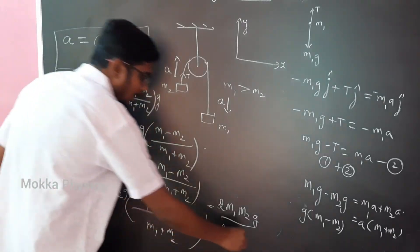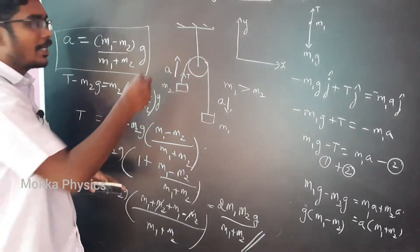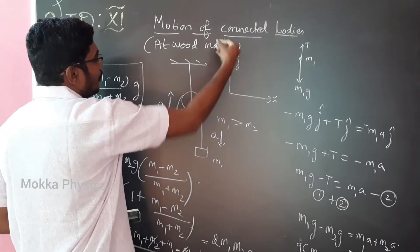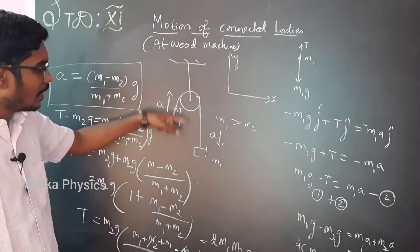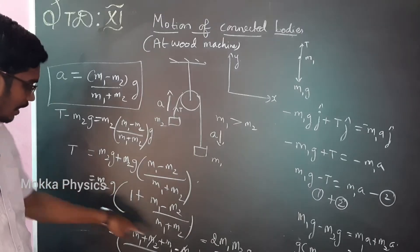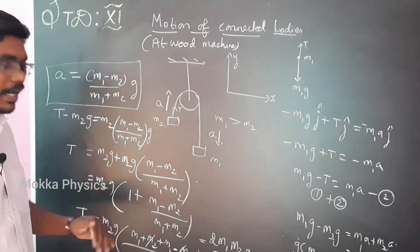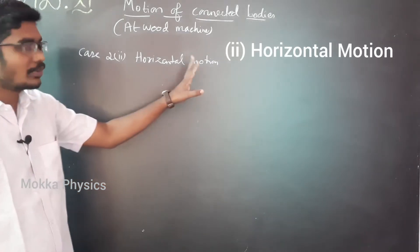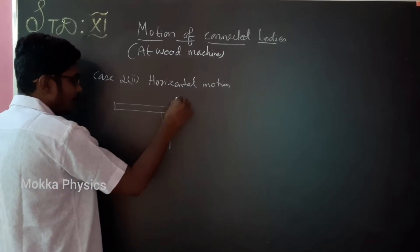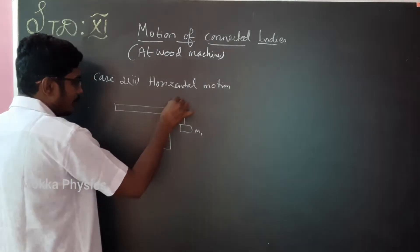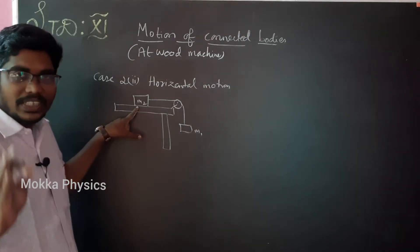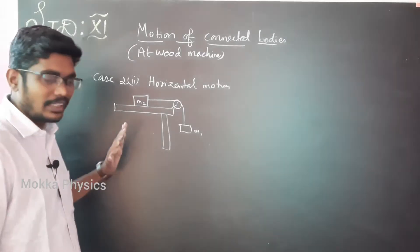This tension formula is for the Atwood machine — one pulley, two blocks. For the vertical case, we calculated both common acceleration and tension. Now we go to Case 2: horizontal motion. There is a table with a pulley. Here is mass m1 hanging and here is mass m2 on the table. We neglect friction and will discuss this now.